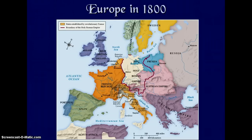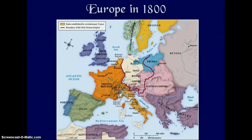This is Europe in the 1800s. You have the French Republic with huge territorial land in Italy. You have the Ottoman Empire, the Austrian Empire, the Prussian Holy Roman Empire, Great Britain, Spain, Portugal, and Russia, of course.